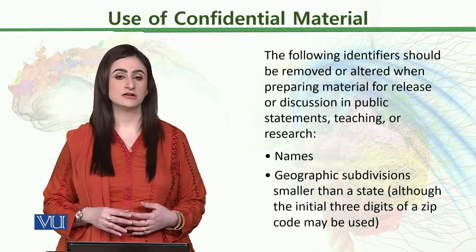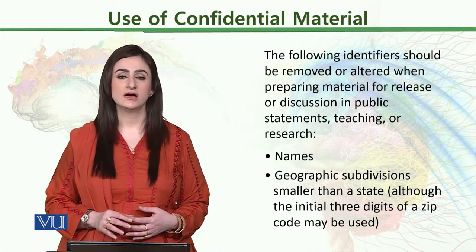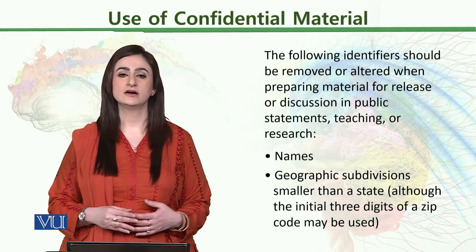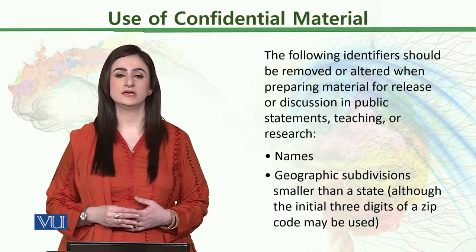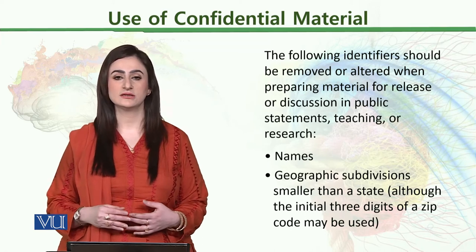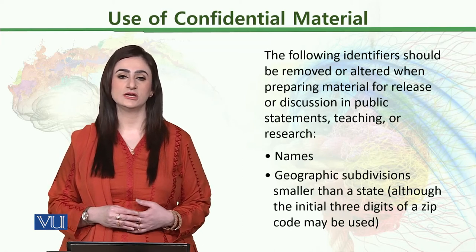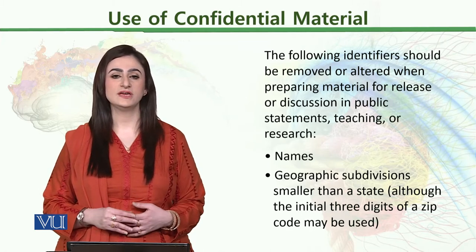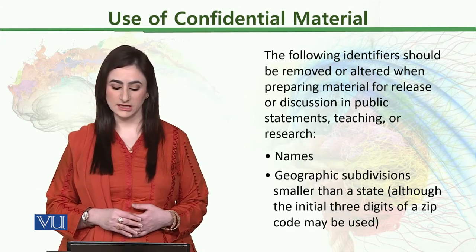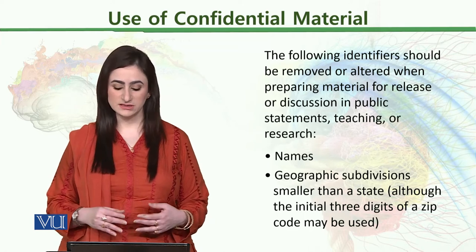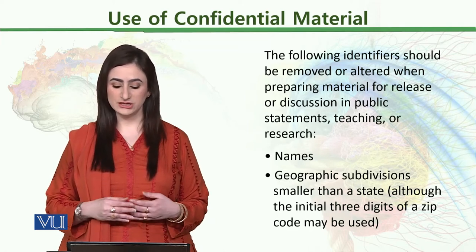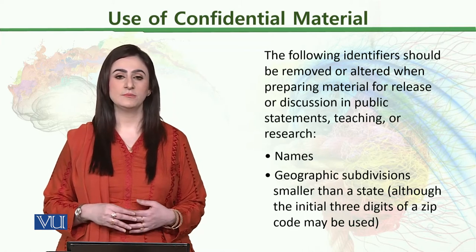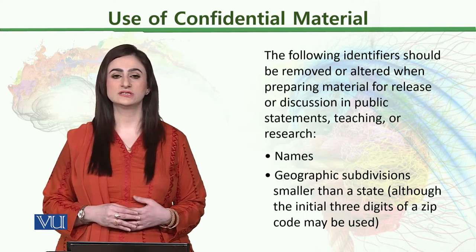Names should not be displayed. Geographical subdivisions smaller than a state — through the initial three digits of a zip code — can be used. In Pakistan, zip codes are used. Every individual has personal information, and geographic data can be provided at the province level.